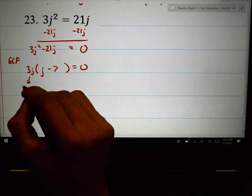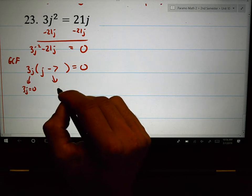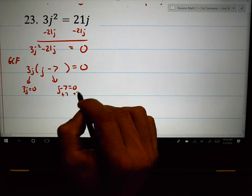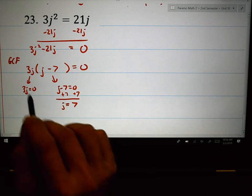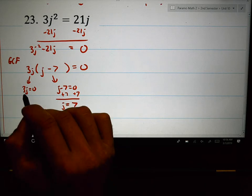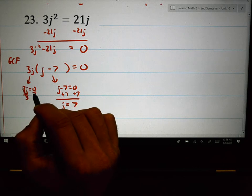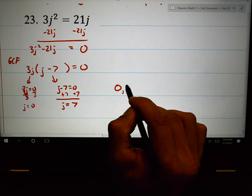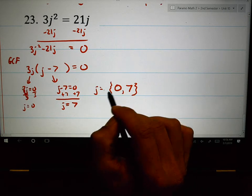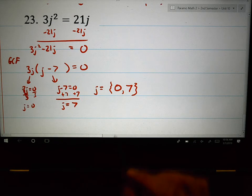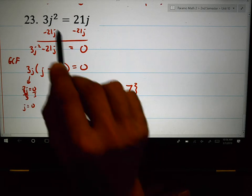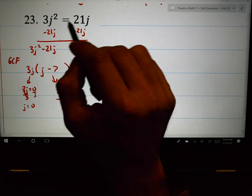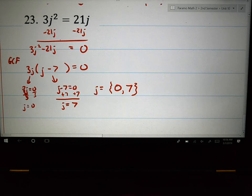This could still equal zero. And this branch could still equal zero using the zero product property. This one's pretty simple. Add seven. Some people get confused when you see the 3j equals zero. Just divide by three and zero divided by three. J can also be zero. Your two solutions, places where it crosses the x-axis, is at zero and seven. Think about that. Plug in zero. Three times zero squared is going to be equal to 21 times zero. Or three times seven squared will equal 21 times seven. It works. I'm going to stop your notes right there.